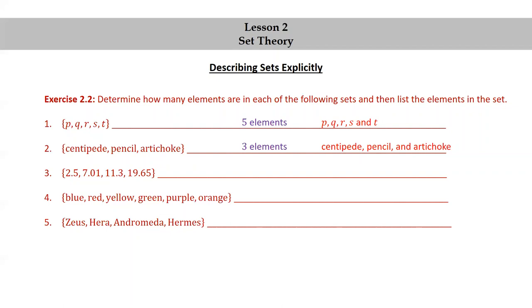The set of 2.5, 7.01, 11.3, 19.65 has four elements: 2.5, 7.01, 11.3, and 19.65.